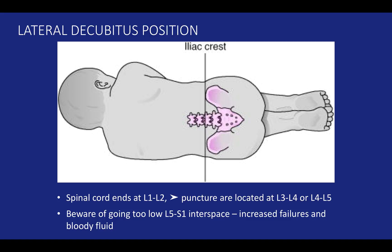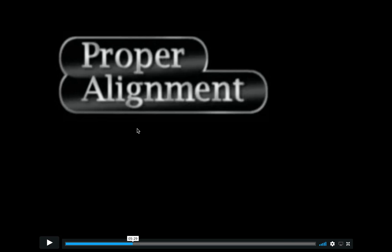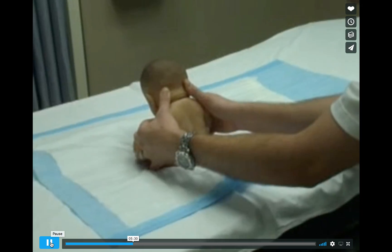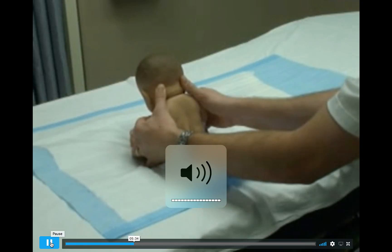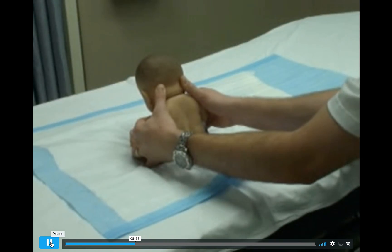Positioning is one of the most important aspects of this procedure — I cannot stress that enough. Prior to donning your sterile gloves, make sure you check for landmarks above the iliac crest while positioning the patient appropriately. Remember that the spinal cord ends about L1 to L2, so you're aiming for the L3-L4 or L4-L5 interspace. Beware that going too low will result in failure of the procedure. Please take notice of this video for proper positioning.